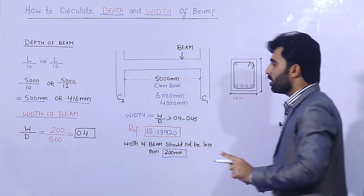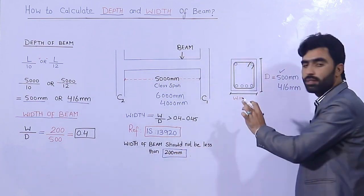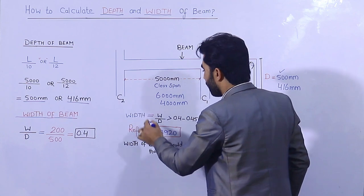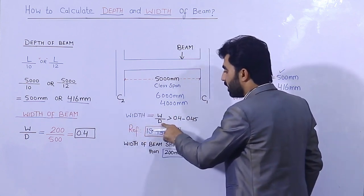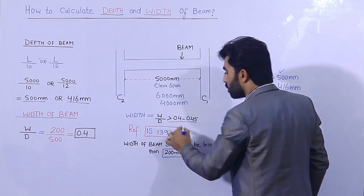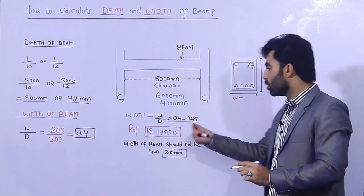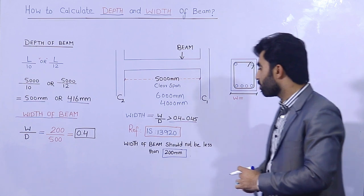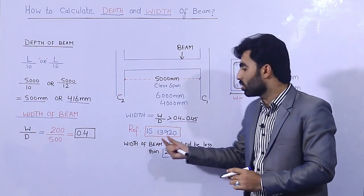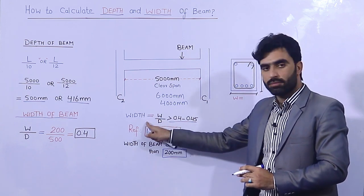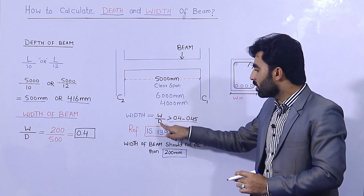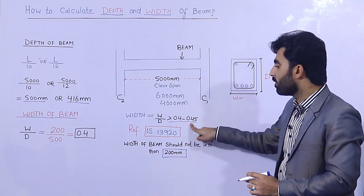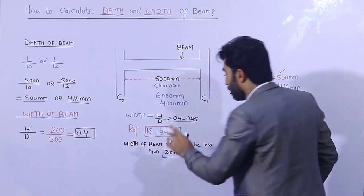Now, what should be the width of the beam? The width of the beam can be found using the ratio W divided by D, which should be between 0.4 and 0.45, from the reference of IS 13920 — the Indian Standard code. The width divided by depth should be greater than 0.4.